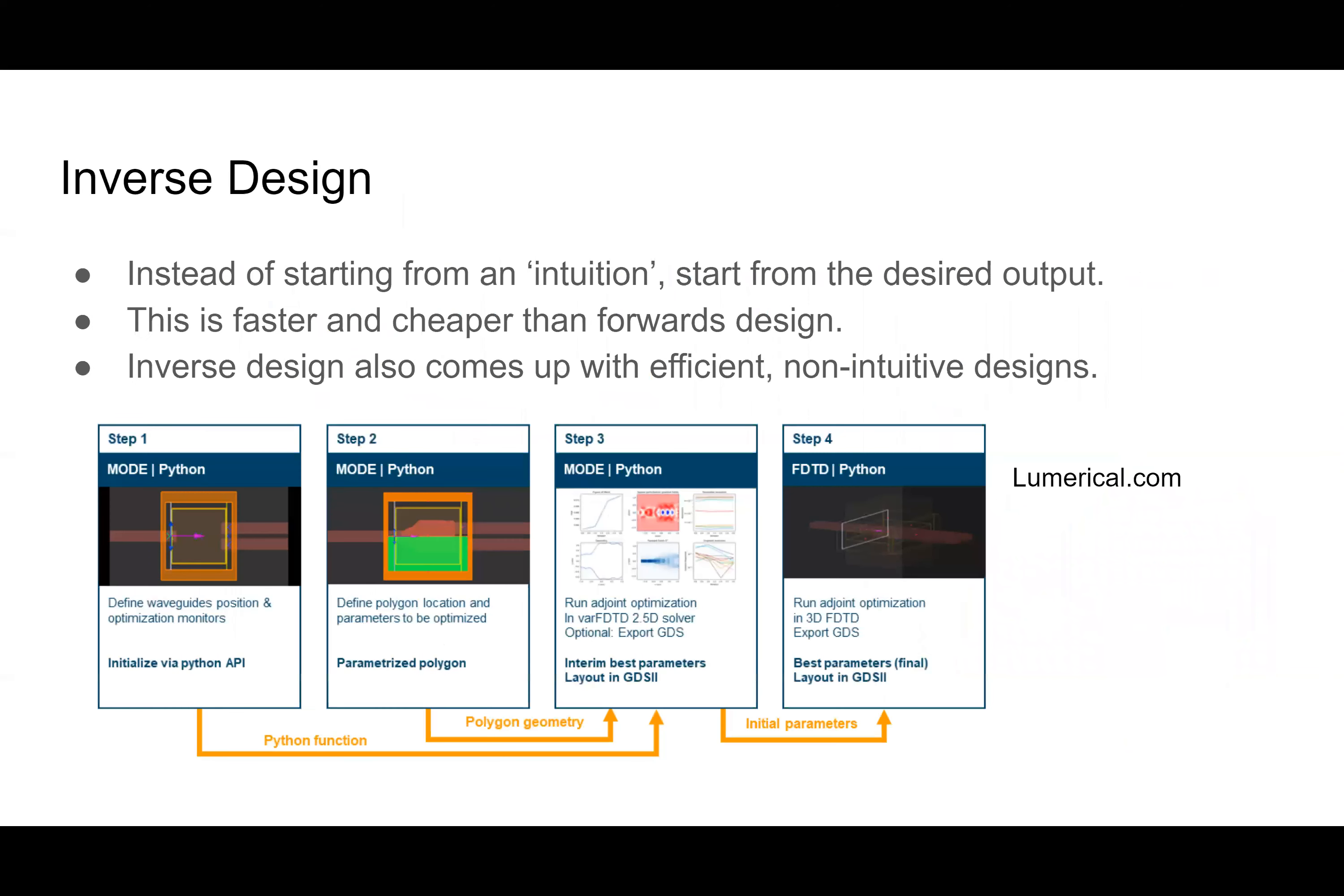We do so using inverse design. In normal design, which is called forward design, we start with an intuition of how a specific part should look. For example, a Y branch. We have our intuition that a Y branch should look like a Y, so we design our Y branch based on that intuition. And then at the end, we take our prototype, test the prototype and test the output to what the theory said. Now, this can take a long time. You have to go through many iterations of your project because, of course, not a lot of them are going to be right on the first try. So you have to spend a lot of time fine tuning what you have.